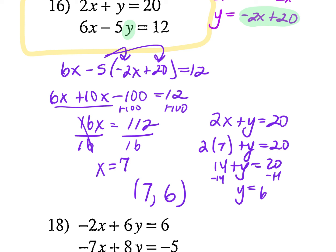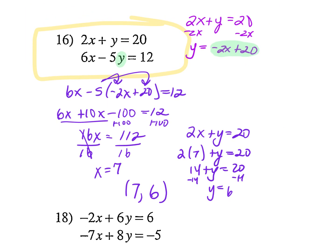Am I right? Let's check. 7 times 2 is 14, plus 6 — does that give me 20? Yes. On the bottom: 6 times 7 is 42, minus 5 times 6 is 30. Does 42 minus 30 give me 12? Yep. We're good.